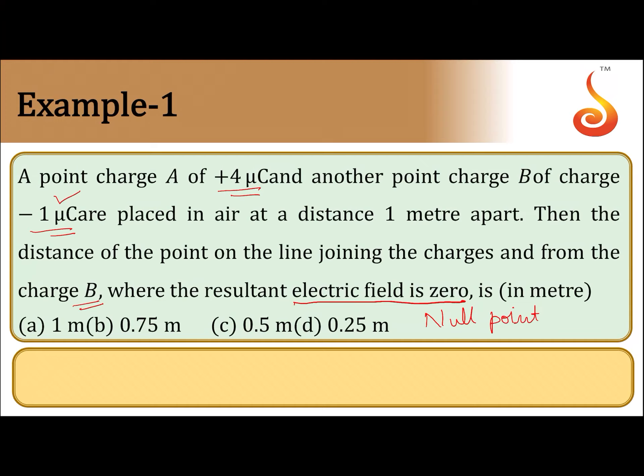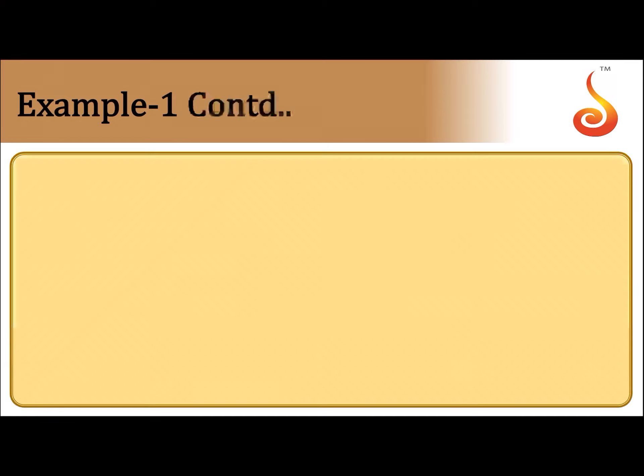Do not compare with the signs — the sign is just to distinguish the two different kinds of charge. Negative or positive does not matter; the weaker charge is 1 microcoulomb, the smaller charge is 1 microcoulomb only. So we need to find the null point from the weaker charge.